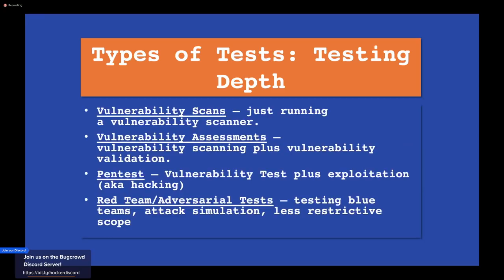Types of testing depth give you different levels of what's required in a test. First, vulnerability scans — tools like Nessus, Nexpose, Qualys for networks, or WebInspect, AppScan, NetSparker for applications. This is just scanning for vulnerabilities and finding low-hanging fruit. Next is vulnerability assessments — basically a vulnerability scan plus validation. You're making sure there are no false positives. Then comes the actual pen test, which takes the vulnerability assessment and adds exploitation — you're actually trying to hack into those systems through those exploits.